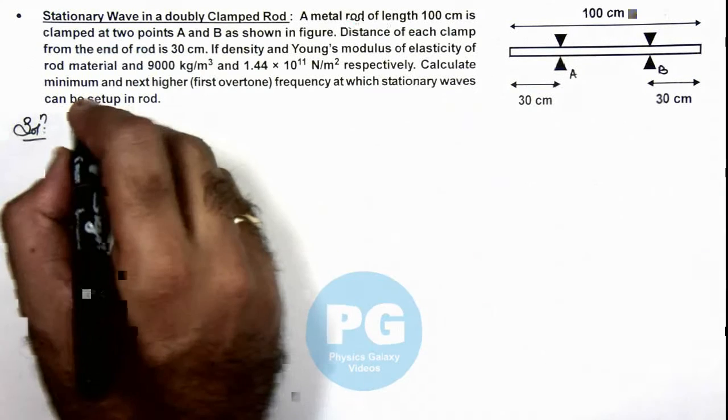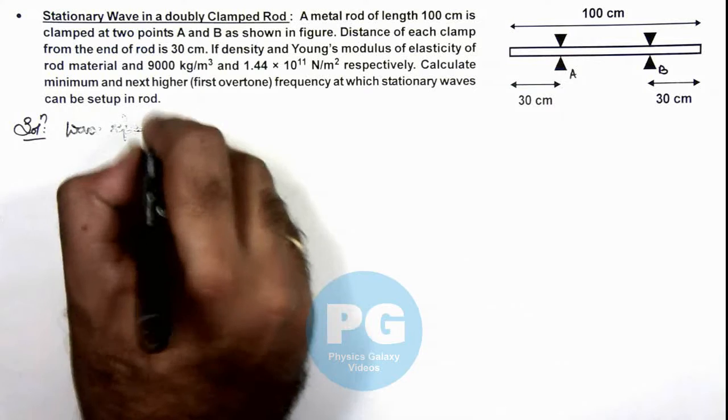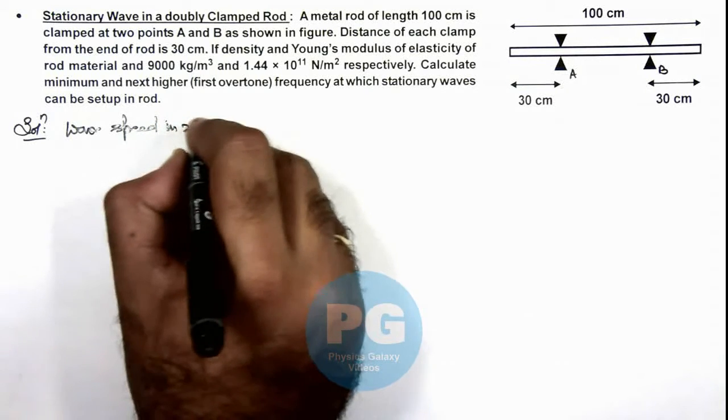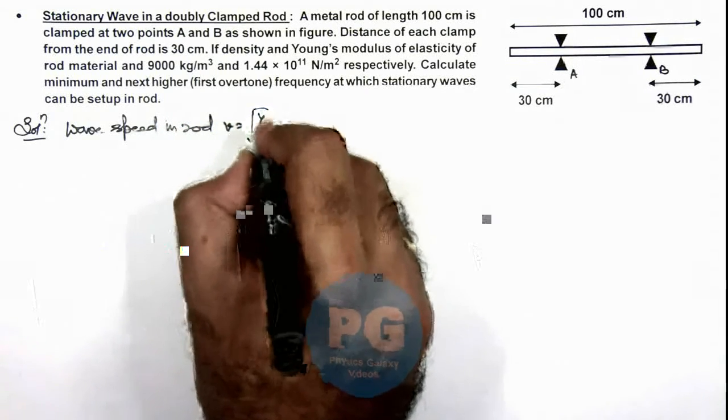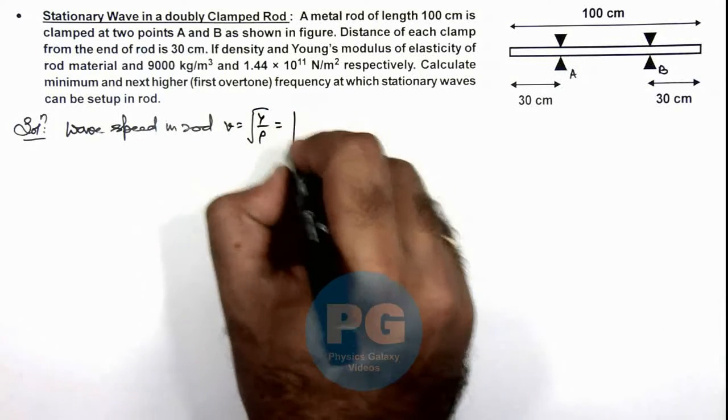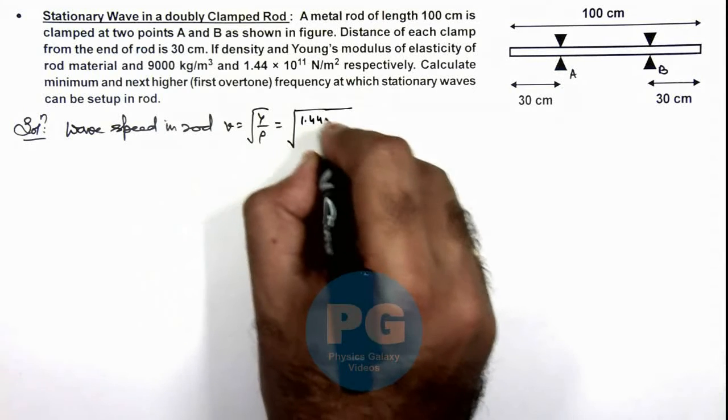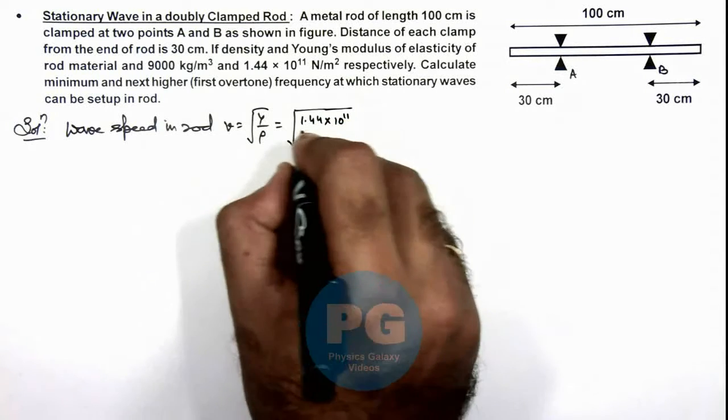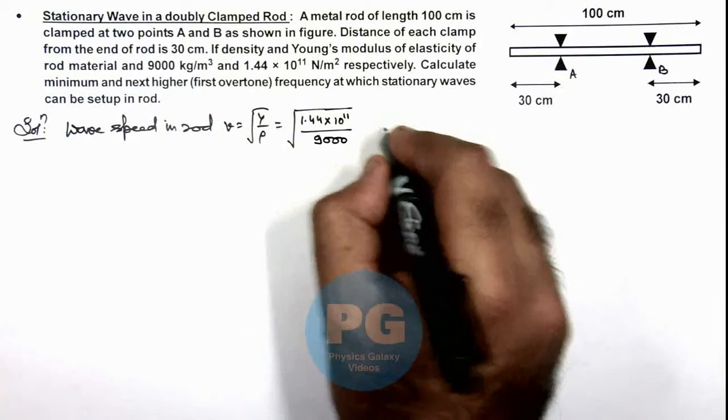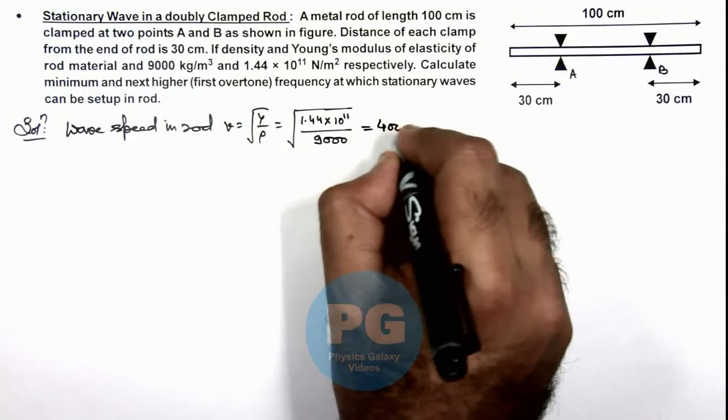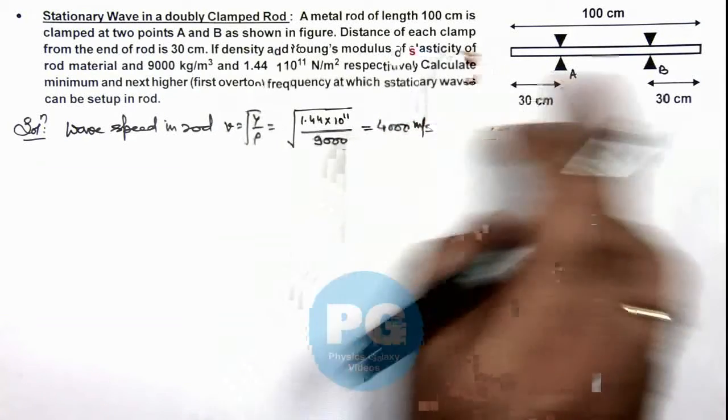For this, first we calculate the wave speed in rod. That can be given as root of Y by ρ, if we calculate it for longitudinal waves. This is 1.44 × 10^11 divided by 9000. On simplifying, this will give us 4000 meters per second—that is the speed of sound waves in the rod.